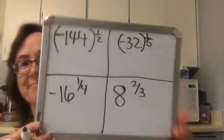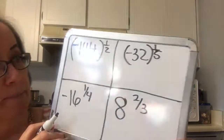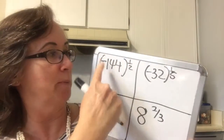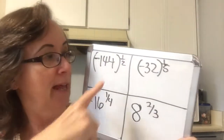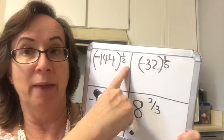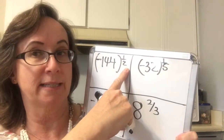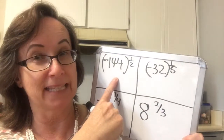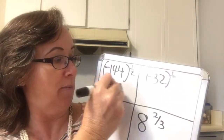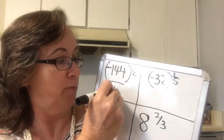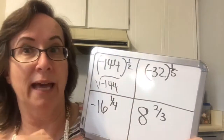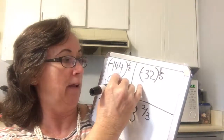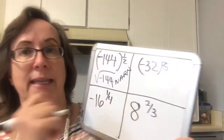Now the negative is included — we have a parenthesis around the negative. This makes the 1/2 power, which is the same thing as the square root, applied to the whole negative. That's the same thing as the square root of negative 144, and we know that is not a real number.